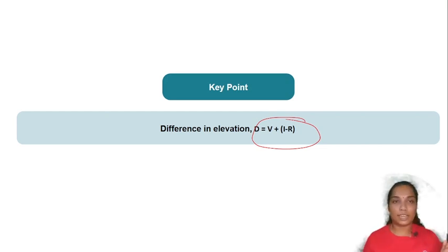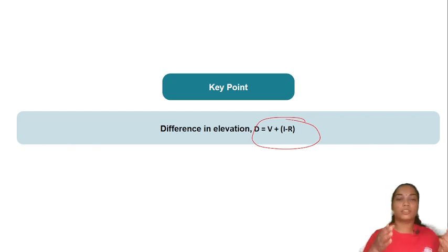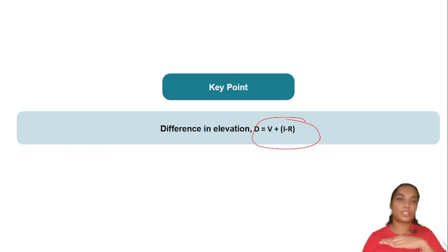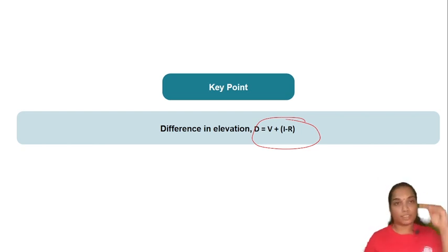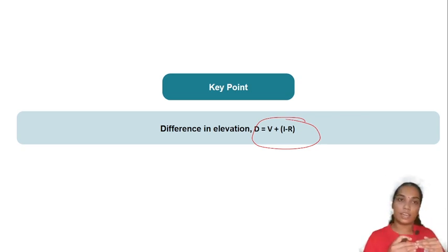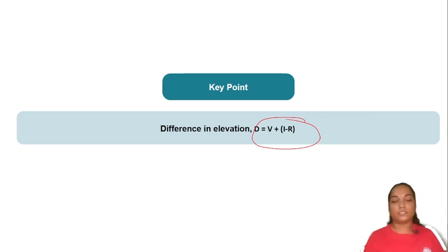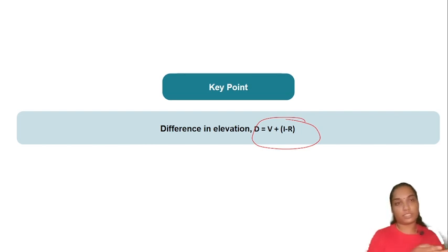The key point is that the elevation difference equation uses three variables: vertical distance, instrument height, and ground RL. These three values — vertical distance, objective instrument station height, and ground RL — are important for the calculation.